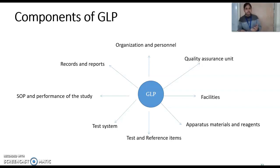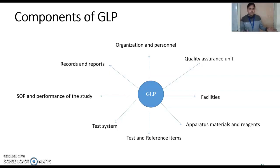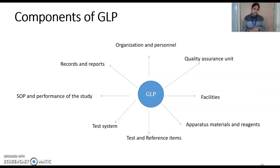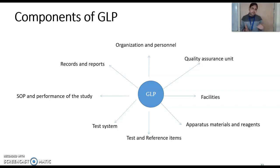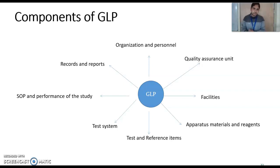You need proper facilities depending on which type of lab you are running — for example, LC, LC-MS, or NMR instruments, with a dedicated room for each. Apparatus, materials, and reagents must be properly labeled with receipt and expiry dates, following first-in-first-out principles. Expired materials should be discarded on time, and proper storage must be provided for test and reference items.